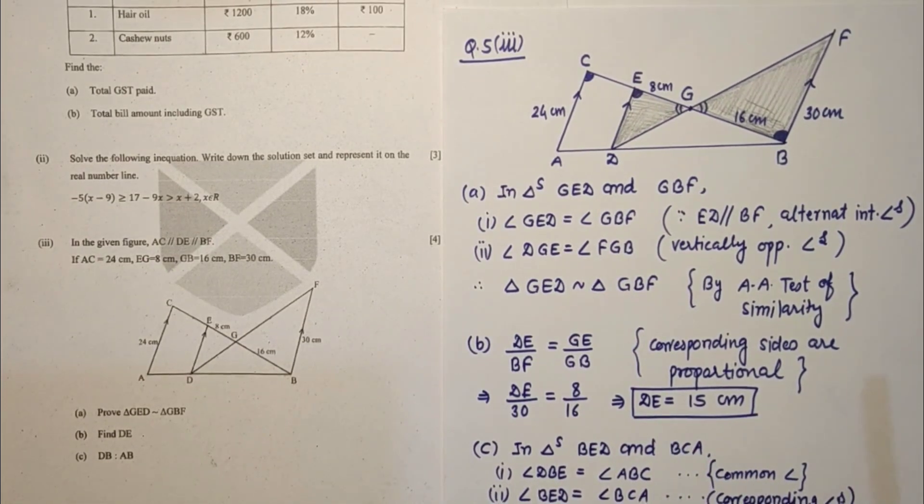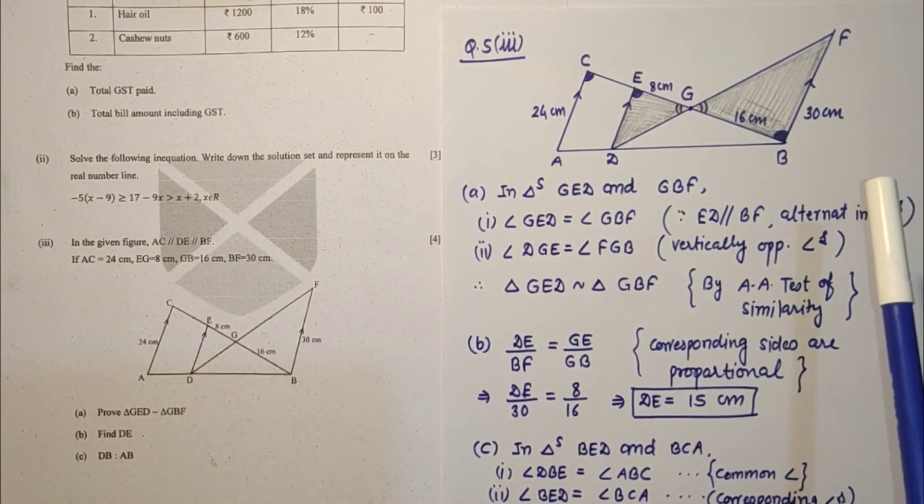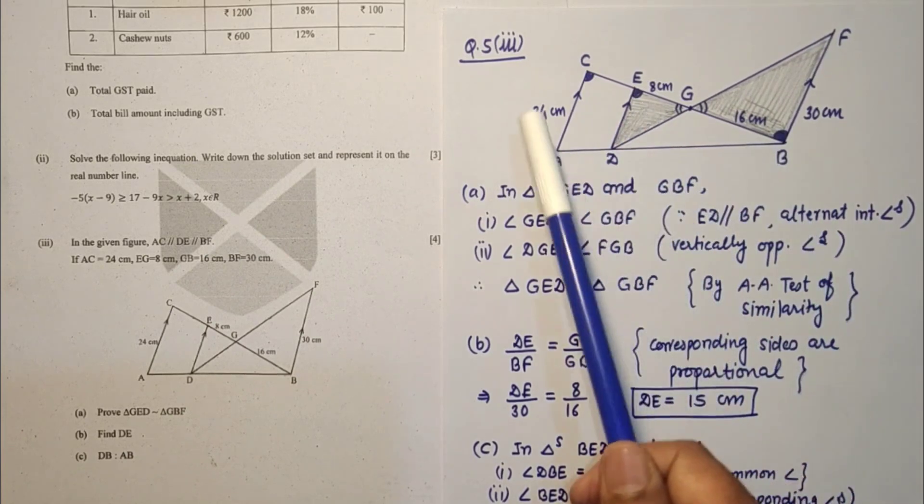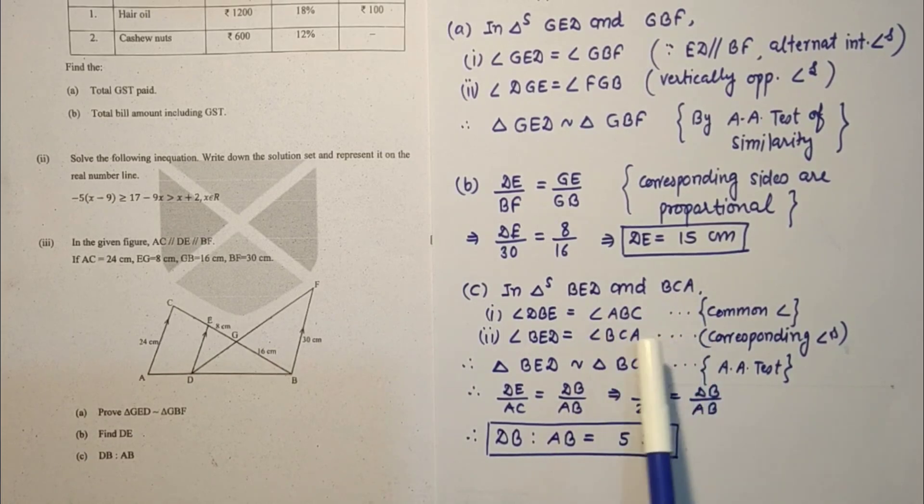Similarly we can prove that triangle BED and BCA are similar by AA test of similarity. Therefore corresponding sides are proportional. After proving these two triangles similar, DB is to AB which is 5 is to 8, that is the required answer.